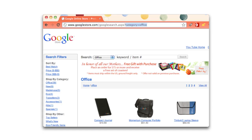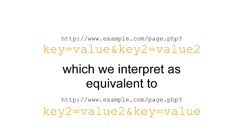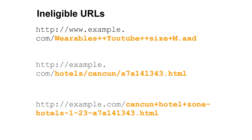Now let's talk about the types of URLs that are eligible for this feature. Here's one from the Google Store: it says category equals office. Other URLs would be things like category equals wearables, or category equals wearables and size equals medium. These URLs are eligible because they come in key-value pairs, or name-value pairs — key equals value, and then perhaps an ampersand, then key two equals value two. Google, when we see these parameters, will treat URLs with parameters in different orders as equivalent. URLs that are ineligible are those that don't use key-value configuration — such as plus signs, directory structures, or custom encoding.